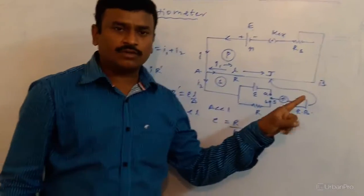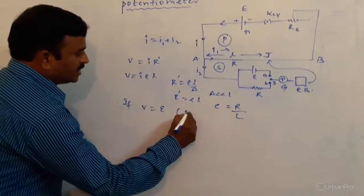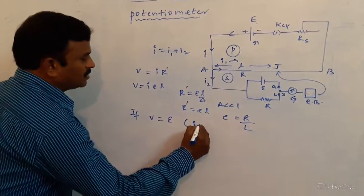Because current chooses the shortest path, the condition is I is equal to I1.